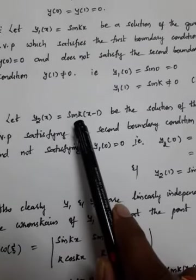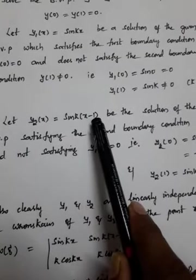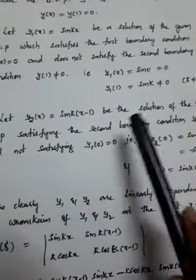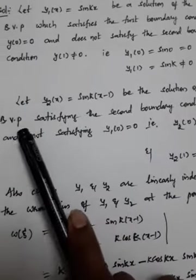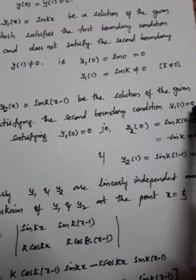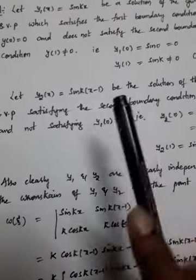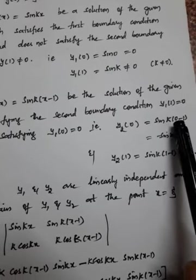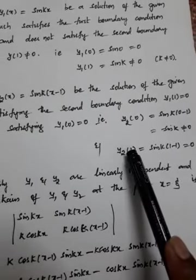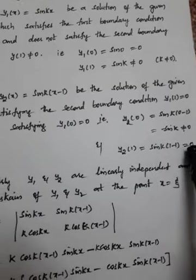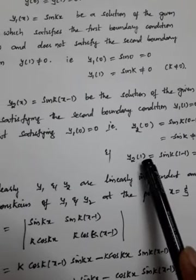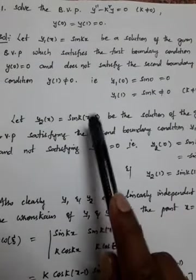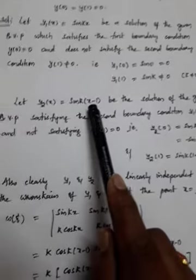Let y2(x) = sin(k(x - 1)). This is also our assumption, such that the second boundary condition should be satisfied and the first boundary condition should not be satisfied. y2(0) = sin(k(0 - 1)) = -sin(k), which is not equal to 0. And y2(1) = sin(k(1-1)) = sin(0) = 0. So the second boundary condition is satisfied whereas the first is not. These two solutions will be used to construct the Green's function.